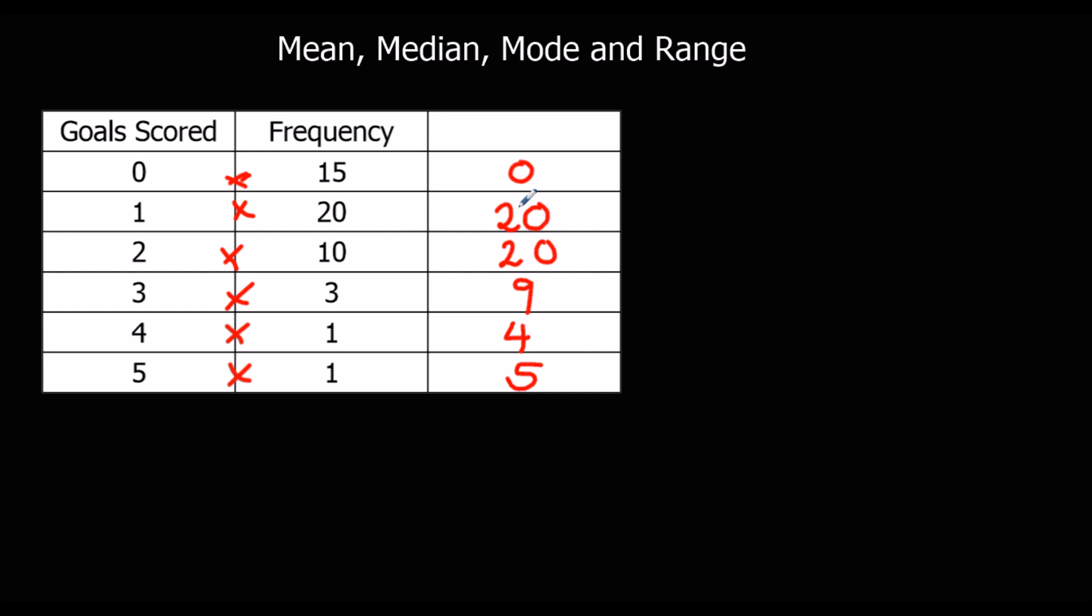So we've got 49 plus another 9. So that makes 58. So in total, there are 58 goals scored. So to work out the mean, we have to divide by how many numbers there were in total.